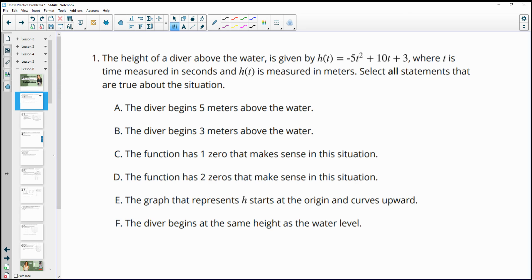Number one tells us the height of a diver above water is given by this function, where t is the time measured in seconds and h(t) is measured in meters. Select all statements that are true about this situation. So A says that the diver begins five meters above the water, and B says that the diver starts three meters above the water. So only one of these can be true, and it's this constant number here that doesn't have a variable that is our initial height. And that would be because we would plug zero in for time, so our initial time is zero, and anything times zero would be zero. So that initial height is going to be three meters, not five.